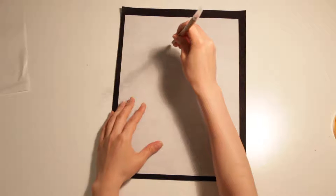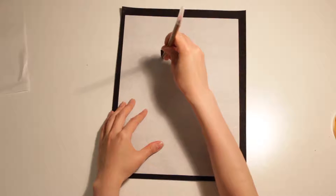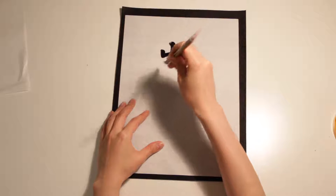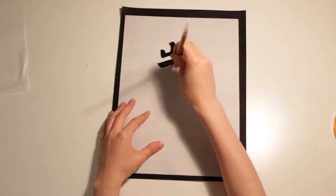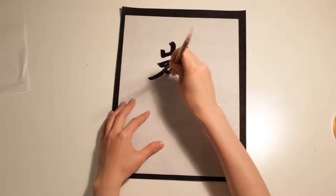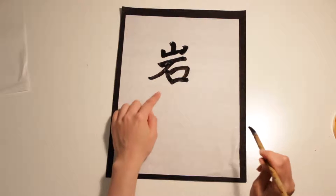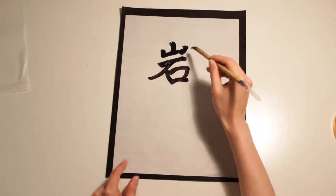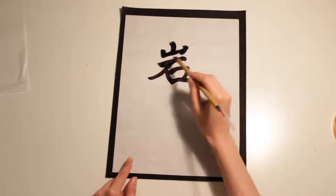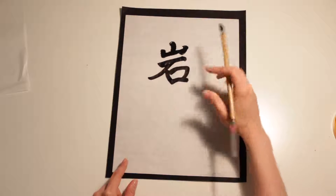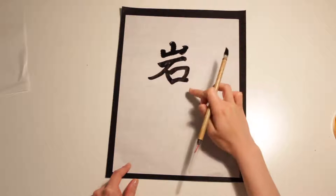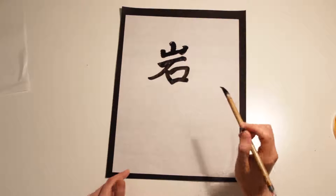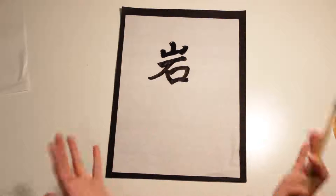So I will just write Iwa. This is Iwa. Actually, this part is mountain — Yama. And this part is stone. This character is Iwa, and Iwa means something like a huge stone, like Roku.